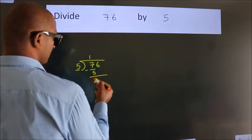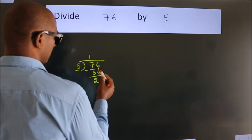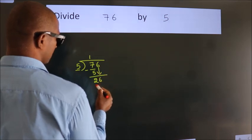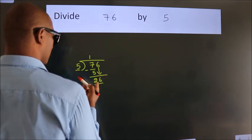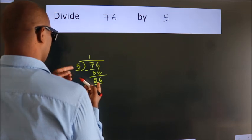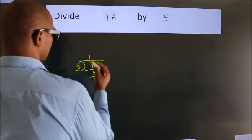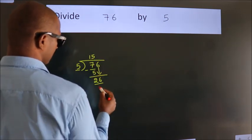After this, bring down the beside number. So, 6 down. So, 26. A number close to 26 in 5 table is 5 5s 25.